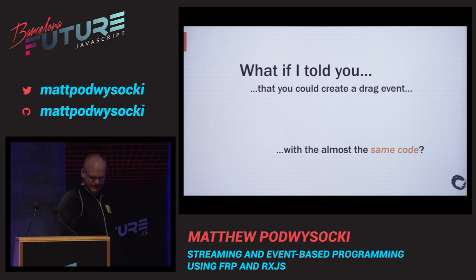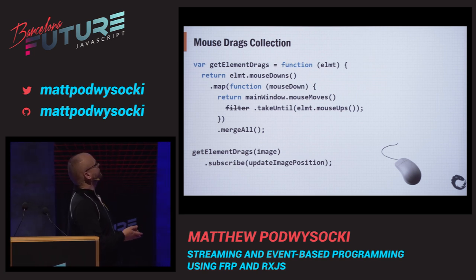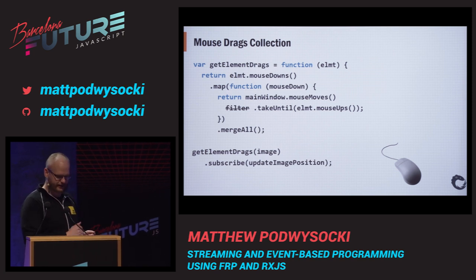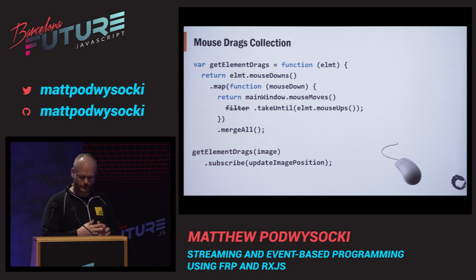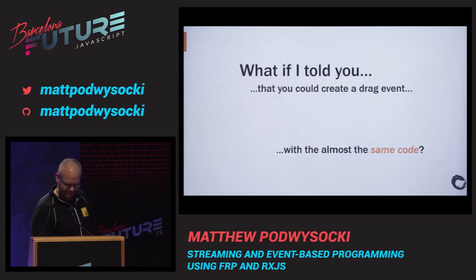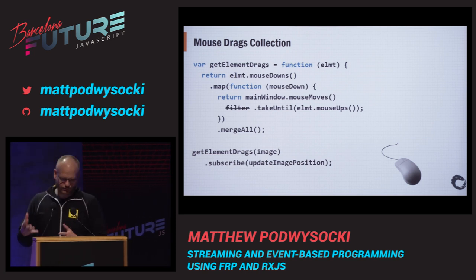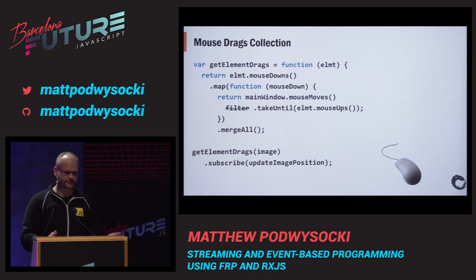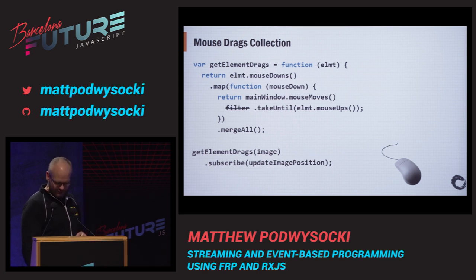What if I told you that the same code you just saw could also create a mouse drag event without much change? What it would be is: we take mouse down, map to take mouse moves, and then instead of doing a filter, we say take until mouse up happens. Then merge all once again. Do you really see much difference? The answer is no — because ultimately we are doing this in a very nice compositional manner, no matter where the source happens to come from: a web socket, an event, an XHR. You really don't have to care — you have a unified programming model.